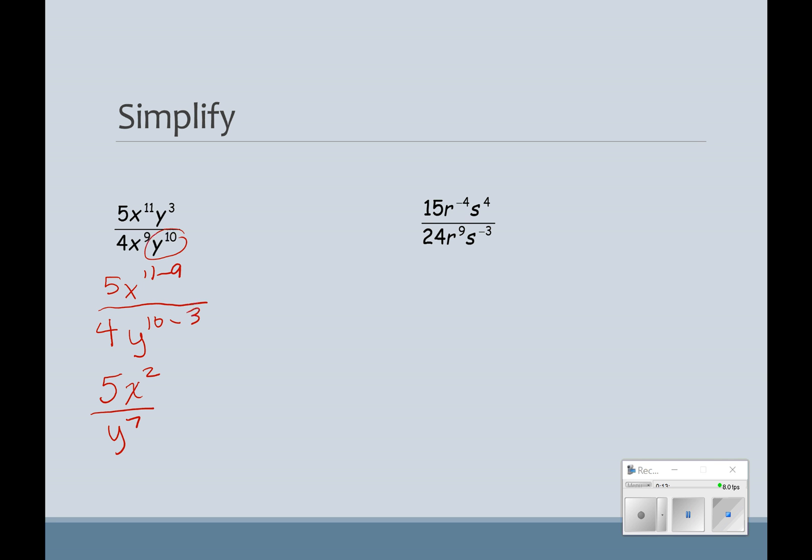In this example here, my highest power, we're going to first of all simplify the 15 twenty-fourths. And 3 goes into both of those. So that becomes 5. Because 3 goes in there, and it becomes 5. If I divide 24 by 3, that's going to give me 8. So I've got 5 eighths. My highest power of r is r to the 9th, and I'm going to subtract negative 4. My highest power of s is up here on the top, and I'm going to subtract negative 3. So s to the 4th minus negative 3. If you go back to your integer rules, we're adding them, right? 4 minus negative 3 is the same as 4 plus 3. So I get 5s to the 7th over 8r to the 13th.